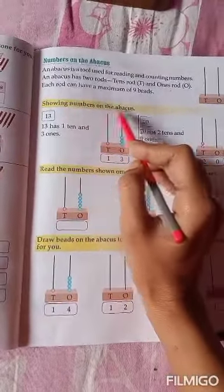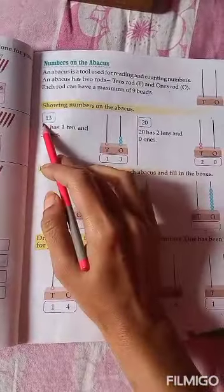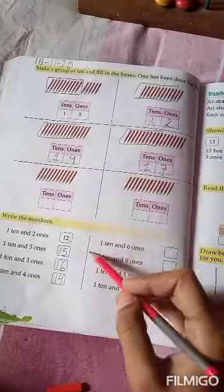Showing numbers on the abacus. You have to show numbers on the abacus. Like, you have to make 13. 13 has one ten and three ones. Here you, you have done this page.